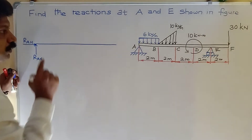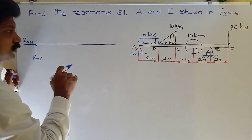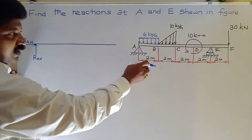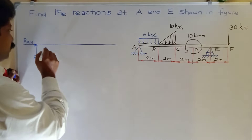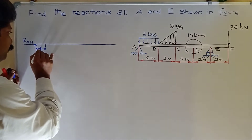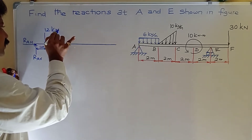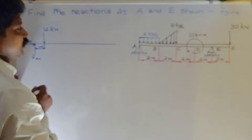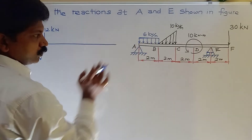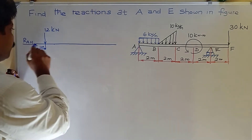Now convert the UDL into a point load. Total load equals load intensity multiplied by total distance, so 12 kN. The position of the equivalent point load is at total distance divided by 2, which gives 1 meter from point A.